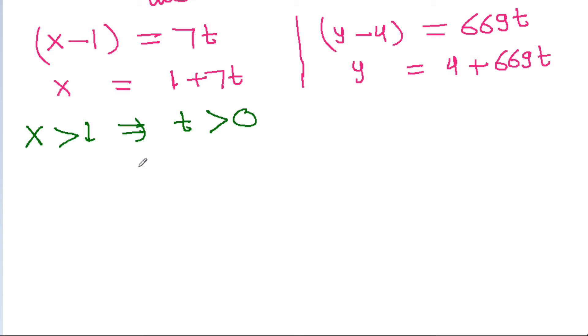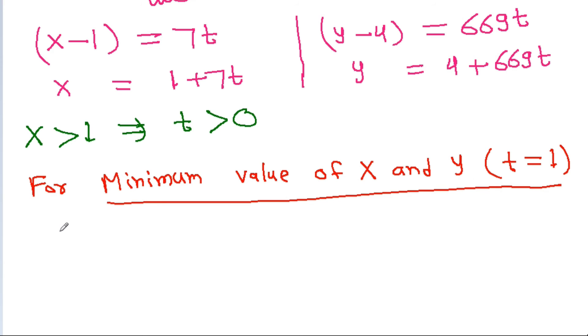So for minimum value of x and y, t must be equal to 1, and we get x is equal to 1 plus 7 that is equal to 8, and y will be equal to 4 plus 669, which equals 673.